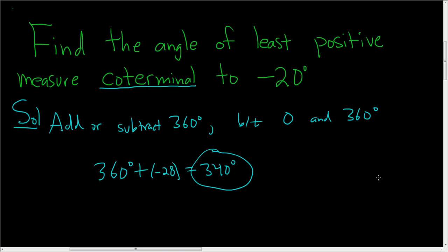If you want a graphical explanation of this, let's think about it. So negative 20 is here. So the coterminal angle of least positive measure would be this one. And so that would be 340.